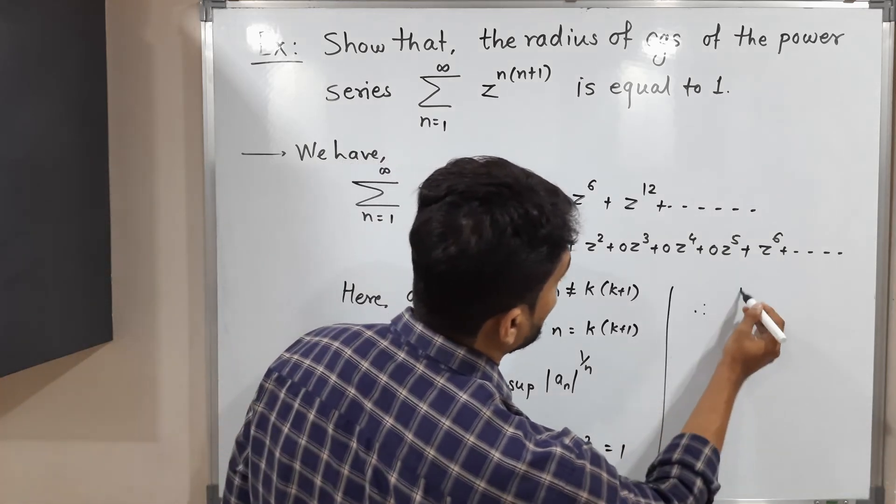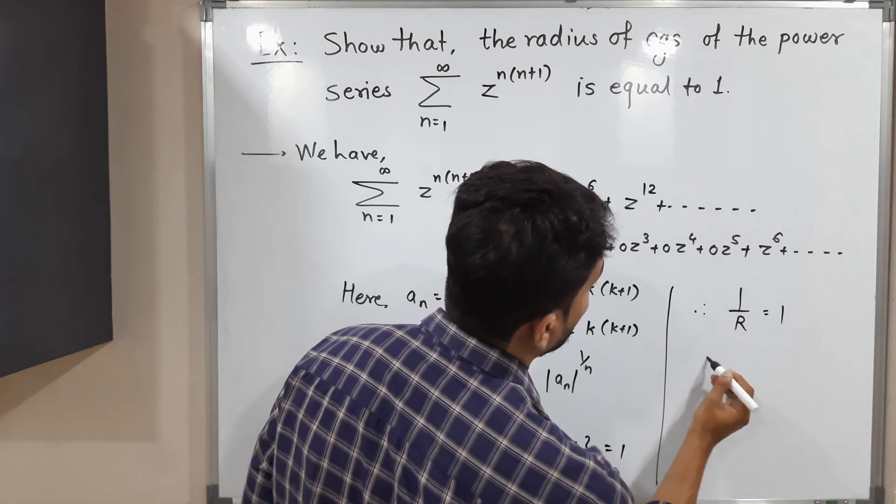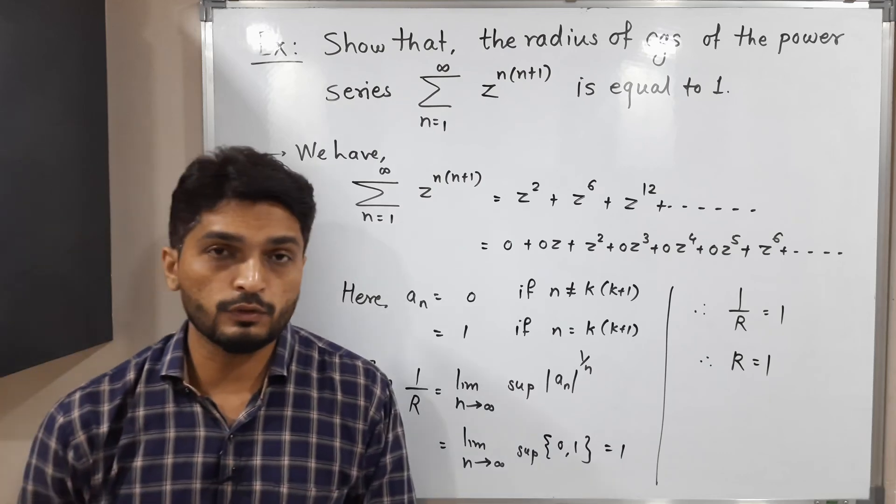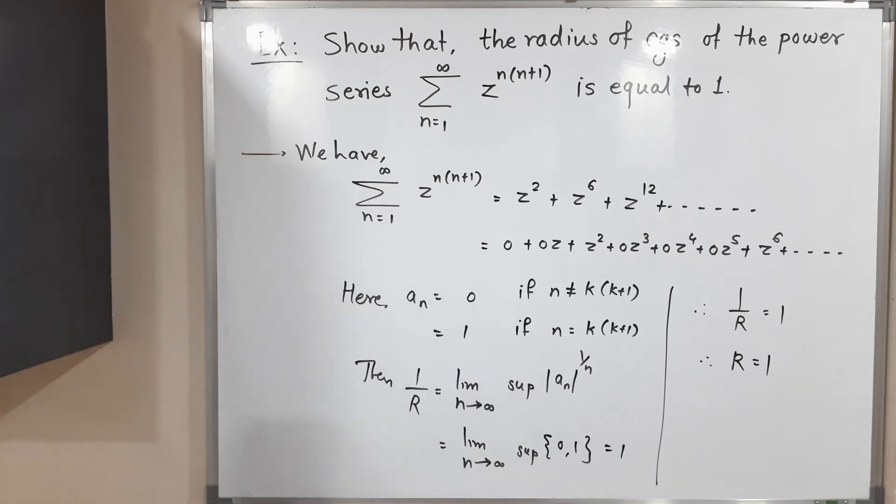So what we get: we get 1/R is equal to 1. So obviously R is also equal to 1 by taking reciprocal. That's why the radius of convergence of the given power series is 1.